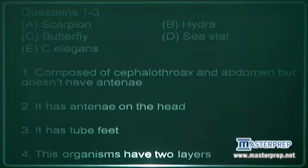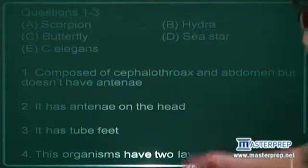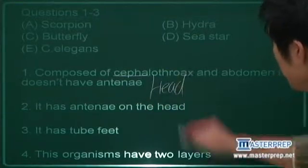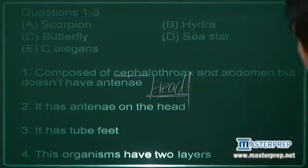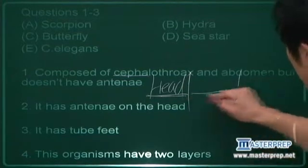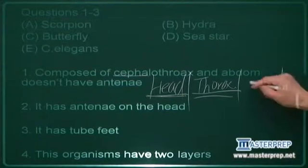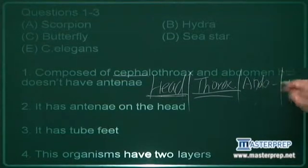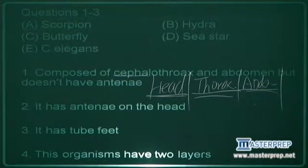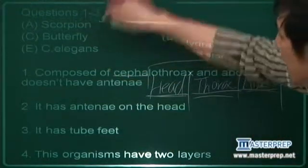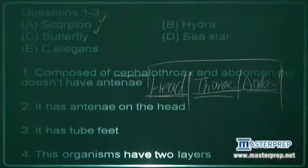Composed of cephalothorax and abdomen but doesn't have antennae. Cephalothorax means this - simply it is talking about a certain organism consists of the head and thorax and abdomen part. What is it? It's talking about arthropods. So we have them here in A and C.